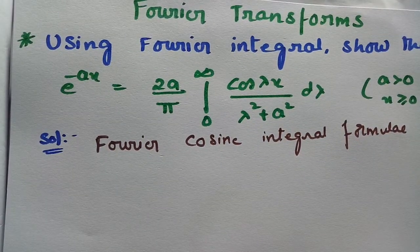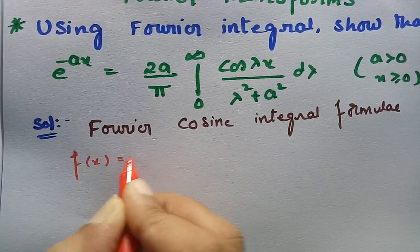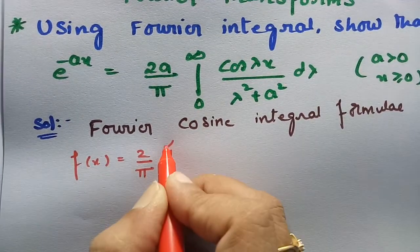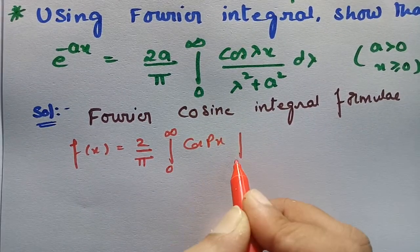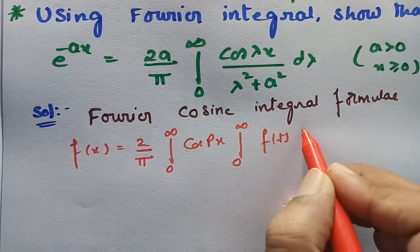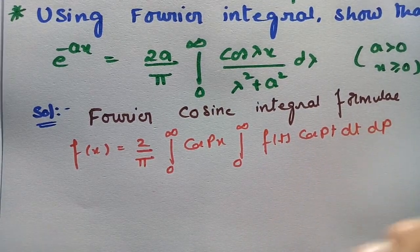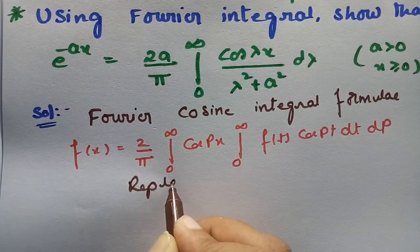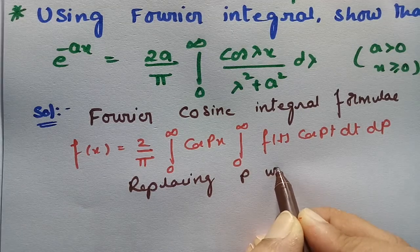So what is that formula? f(x) is equal to (2/π) times the integral from 0 to infinity of cos(px) times the integral from 0 to infinity of f(t) cos(pt) dt, into dp. Now I am going to replace p with λ.